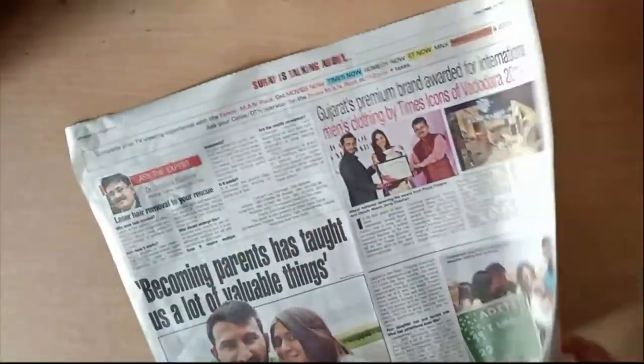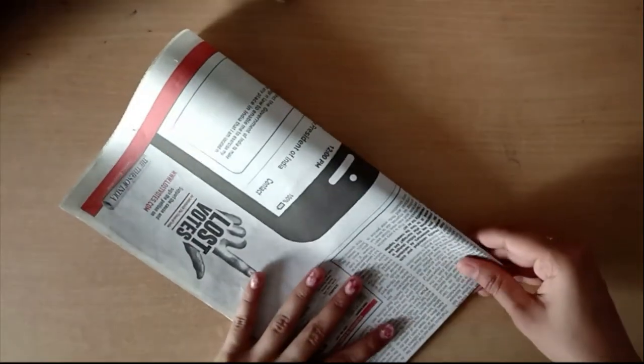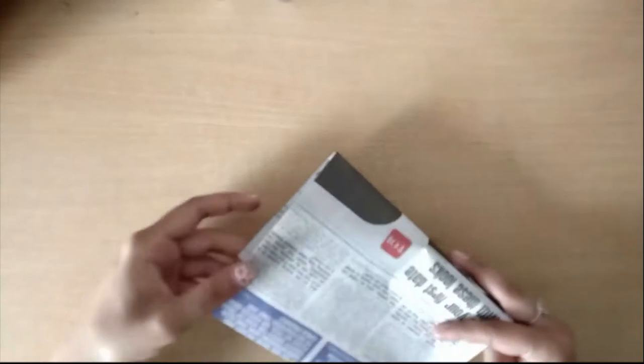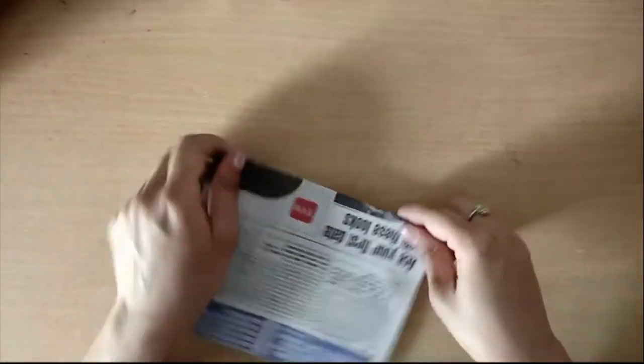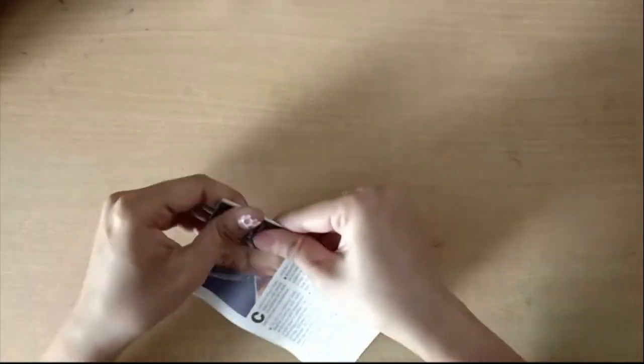First, open the newspaper completely and then start folding it. Let's fold it like this so that it will become the smallest part. This way, in 4 parts, then 8 parts, and then 16 parts.